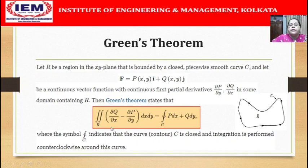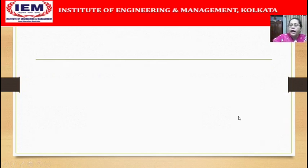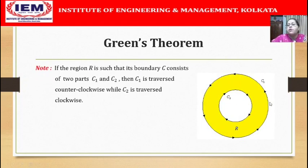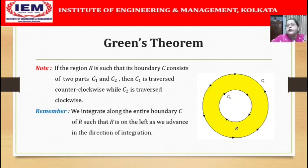The symbol indicates that the curve or contour C is a closed one and the integration is performed along the curve in the anti-clockwise direction. However, if the region R is such that the boundary C consists of two parts C1 and C2, then C1 is traversed in counterclockwise direction and C2 is traversed in clockwise direction. This essentially means that as we integrate along the entire boundary C of the region R, we move in a direction such that the region R is on the left.